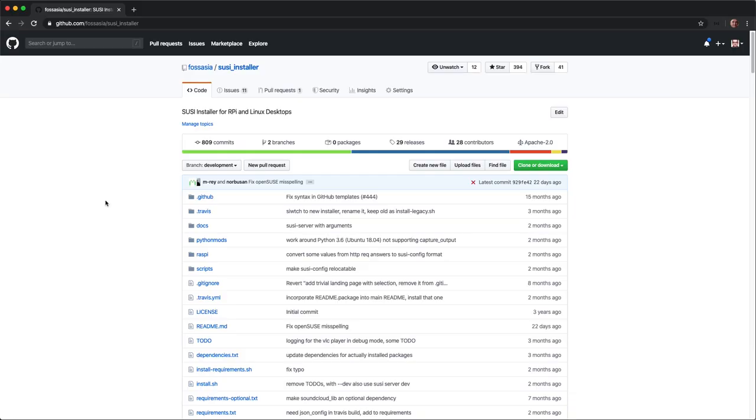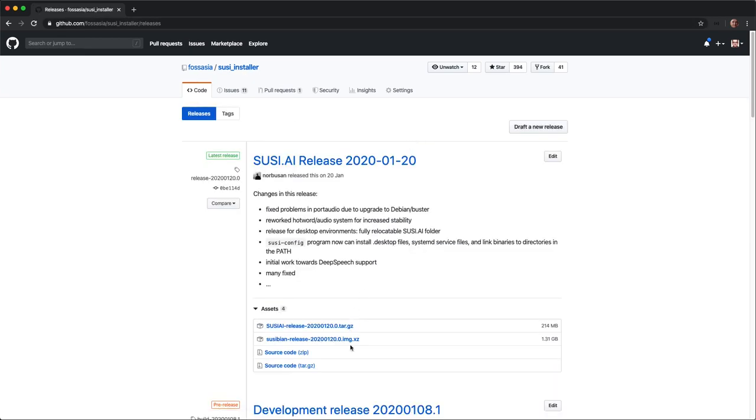So this is how to install your SUSI smart speaker. Go to github.com FOSSASIA SUSI installer and click on the releases and here you can find the images that you need to put on your SD card to run your Raspberry Pi. This is the same as installing a Raspberry Pi image. Take this image and put it instead of the original image on your SD card for the Raspberry Pi.